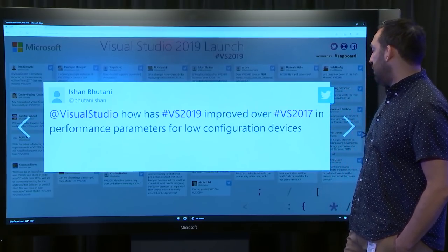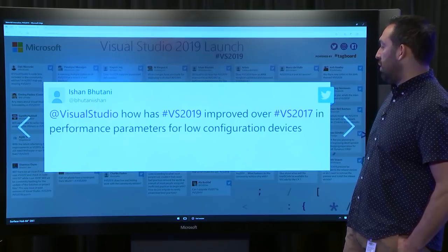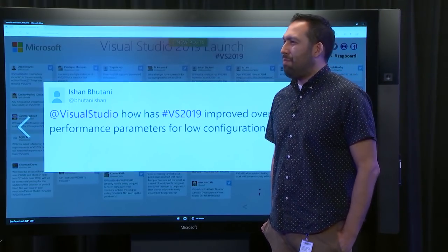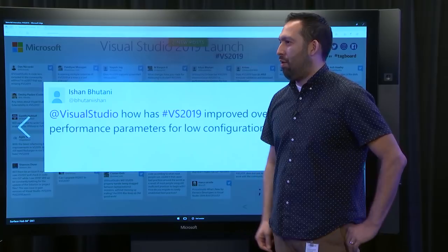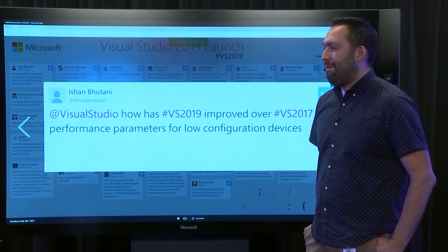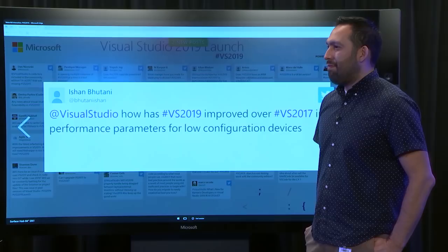From Ishan Bhutani: how has VS 2019 improved over VS 2017 in performance parameters for low-configuration devices — meaning not-so-powerful machines? I haven't looked at those specific dimensions super recently, so I can't cite that off the top of my head. But just to point out on the Mac: I run a 2013 MacBook because the keyboard works great, and at least on that side I know that our improvements are working great on older hardware.